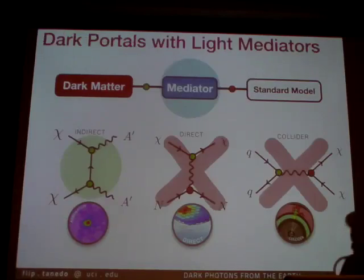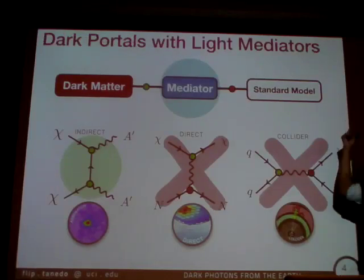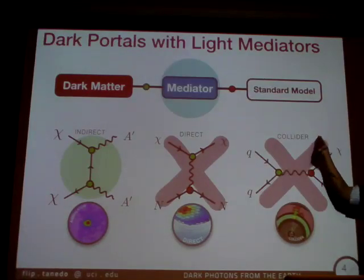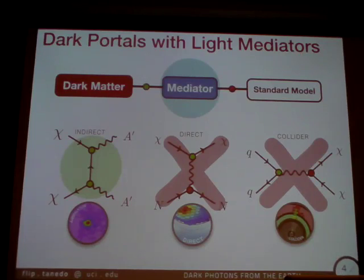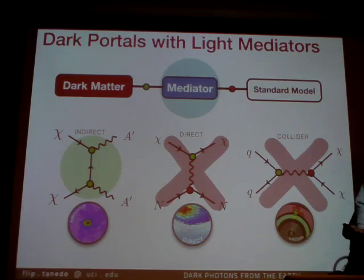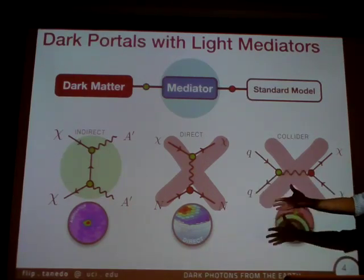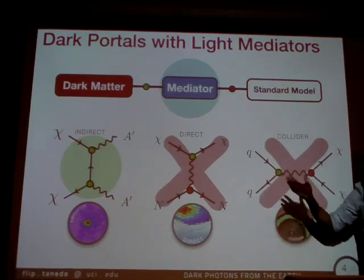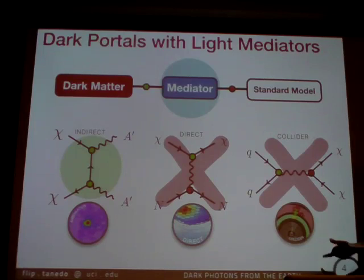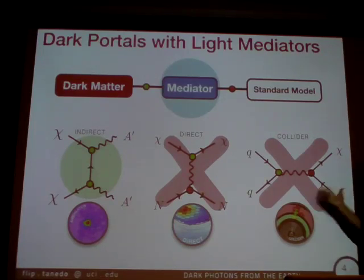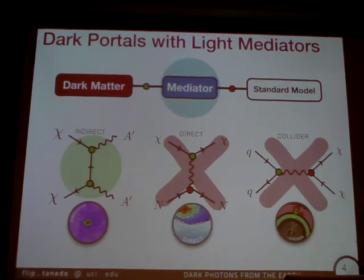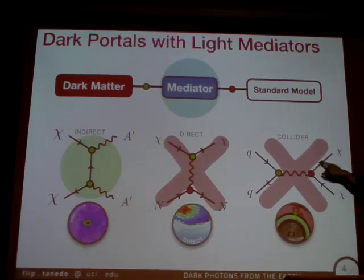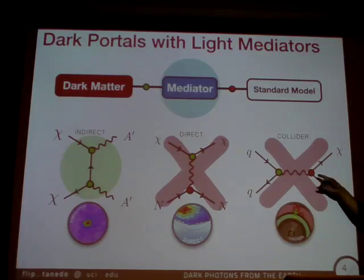One very modest change is to assume that the thing connecting the dark sector and the standard model is a mediator, and that the dynamics of this mediator may be important. In particular, when the mediator is light, dark matter can annihilate directly into this mediator. Now I've thrown in two more couplings, so you've made the model a little bit more complicated — you have a lot more wiggle room. One thing you observe is that this is a very trivial way of saying, well, here's a model where the coupling of the mediator to the standard model can be very small.